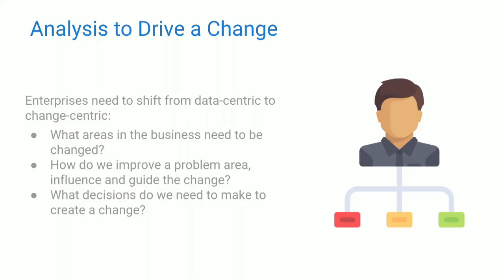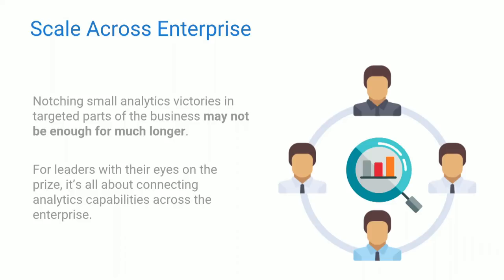That change was driven by data surfaced through predictions in Firebase. That information led them down the path of testing something that wasn't necessarily intuitive, but it ended up leading to a great change for the business's bottom line. Getting small analytics victories — like understanding what campaign works better in an A/B test — might not be enough on its own. You have to connect analytics all the way through your entire process to improve marketing, sales, and product for big impact.